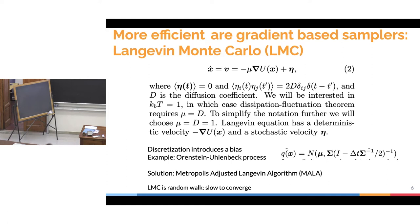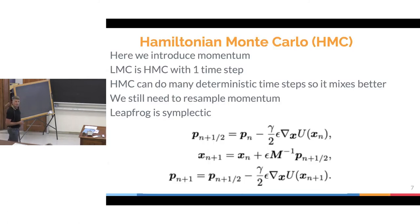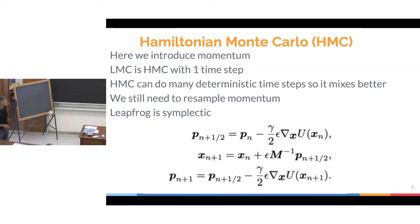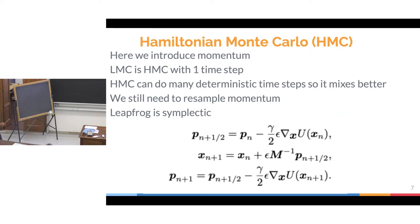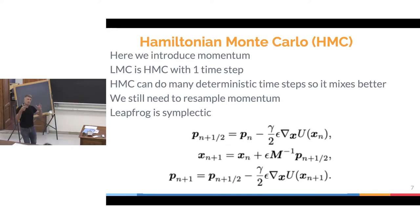Hamiltonian Monte Carlo is also gradient-based. A single step of HMC can be thought of as Langevin, but here you really solve Hamiltonian dynamics using momentum as well. The leapfrog equations first update momentum based on the gradient of the target potential, then update position based on velocity, then update momentum again. What's nice about the leapfrog scheme is that it's symplectic — while it doesn't exactly conserve energy, energy is roughly conserved over long integrations.